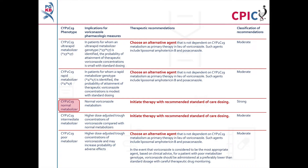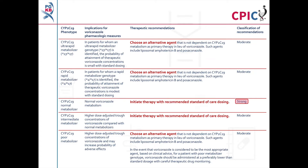Patients with a CYP2C19 normal metaboliser phenotype will have normal metabolism of voriconazole. These patients can be given voriconazole with the recommended standard of care dosing. This is a strong recommendation.